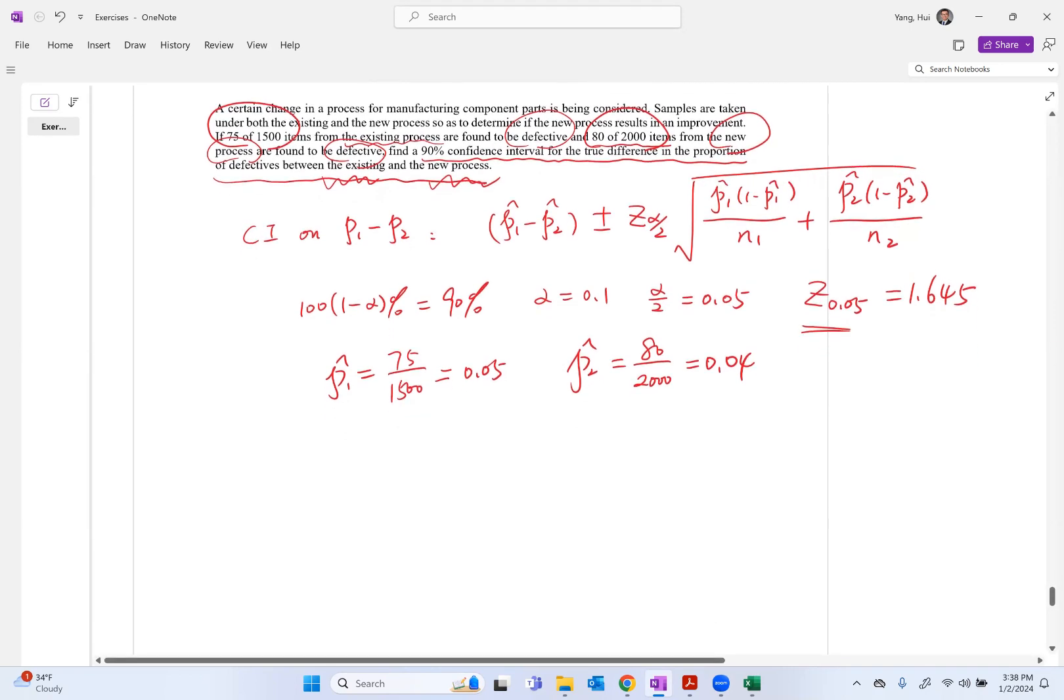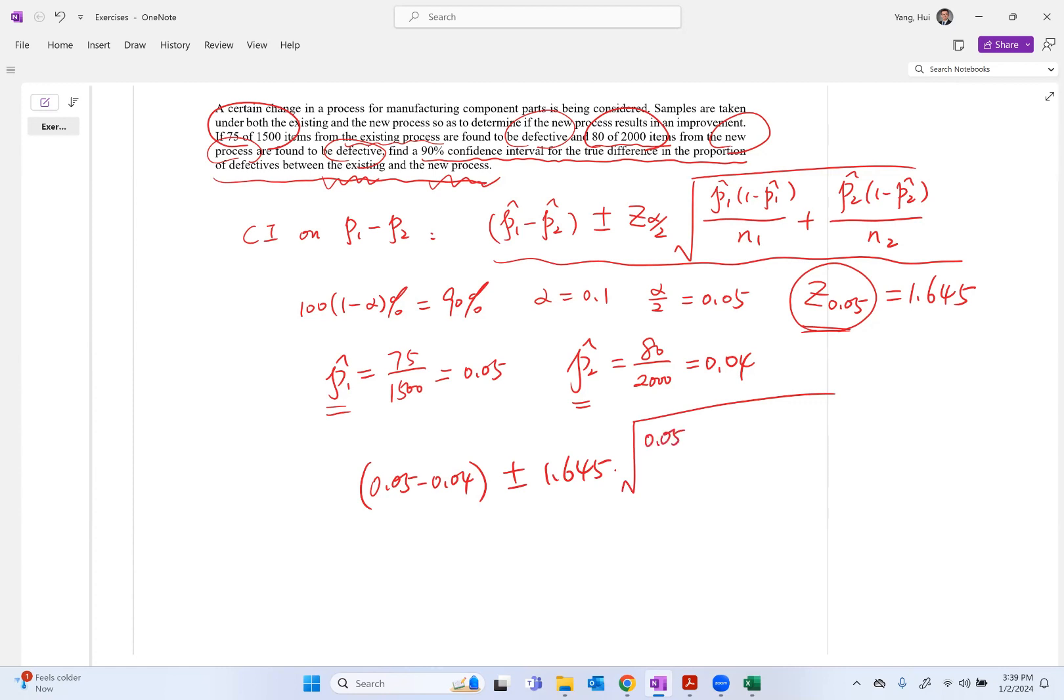Now let's put these numbers into the confidence interval equation. This will become 0.05 minus 0.04 plus minus 1.645 times the square root of p1 hat times 0.95 divided by 1500 plus 0.04 times 0.96 divided by 2000.